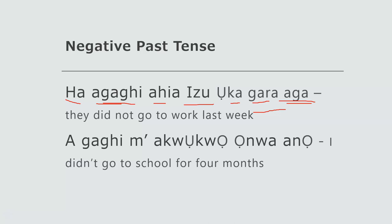Let's use another example: 'Aga he magu hua ongwa no' — I didn't go to school for four months. 'Aga him' — I — 'ahu hua ongwa no.'